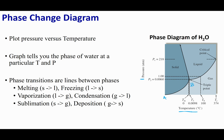The line segment from A to B is going to be based off of the solid's vapor pressure. Above this line, solid is described, and below this line, gas is described. So section A-B represents the solid's vapor pressure.